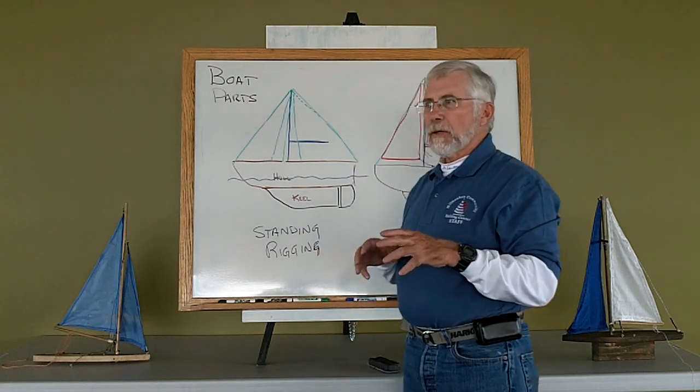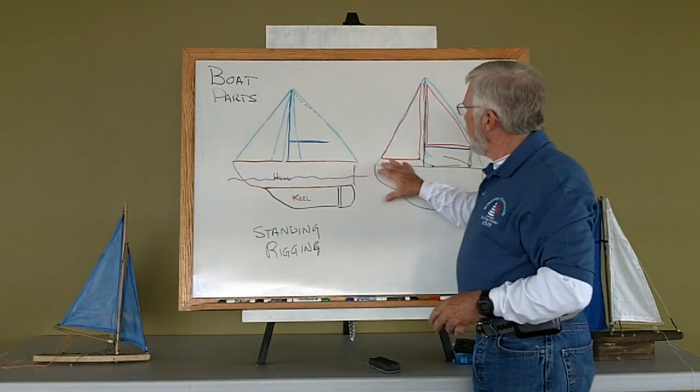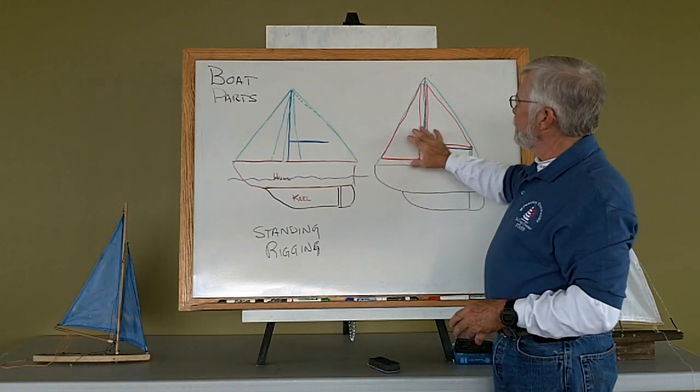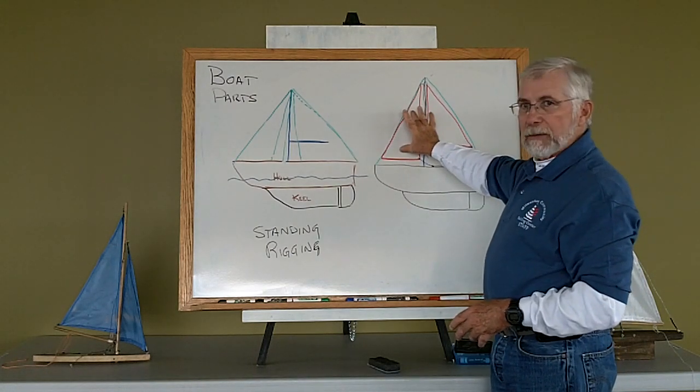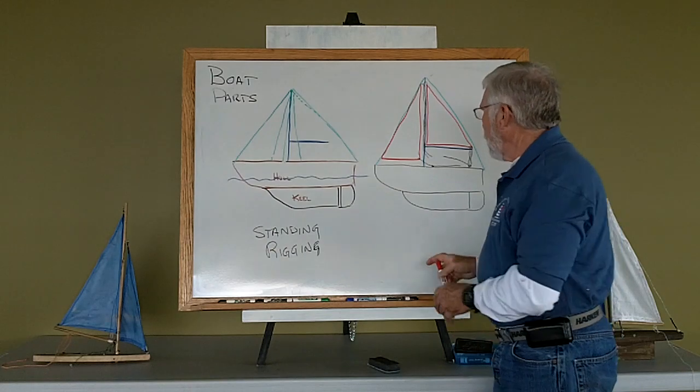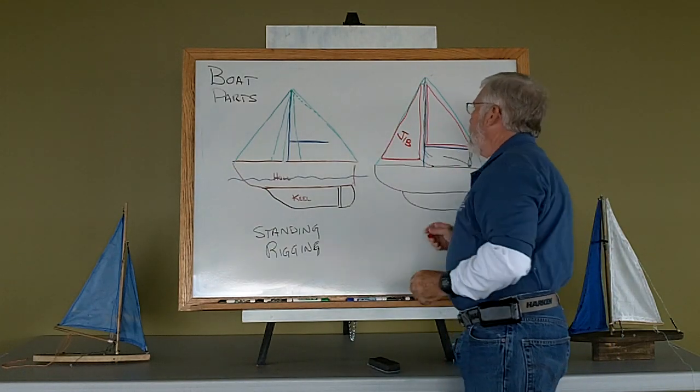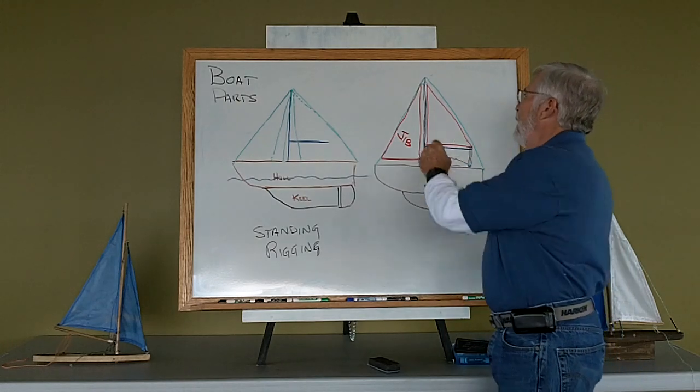So continuing the discussion on our boat parts, now let's add the sails to the boat. Same basic boat, but now we have a foresail that, in our case, we're going to call a jib and a mainsail.